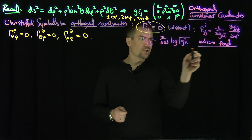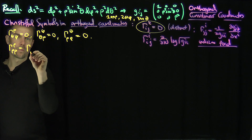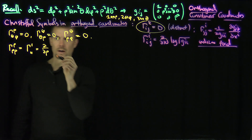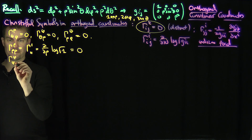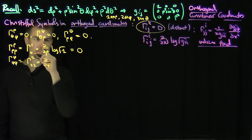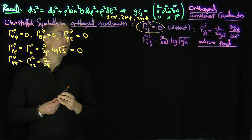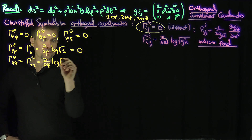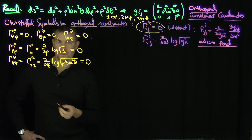Now let's look at the cases where all indices are equal. γ^(ρ,ρ,ρ) = γ^1_11 is the ρ-derivative of log(√1), which is clearly 0. γ^(φ,φ,φ) = γ^2_22 is d/dφ of log of the square root of the φ-component ρ² sin²θ. There are no φ's in that expression, so it's also 0.